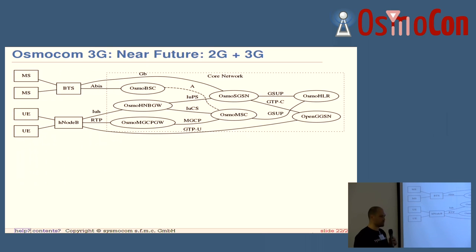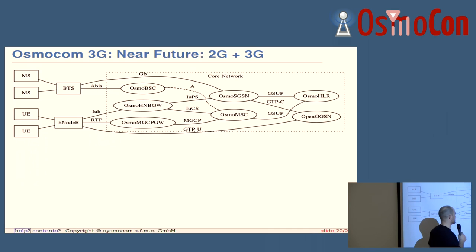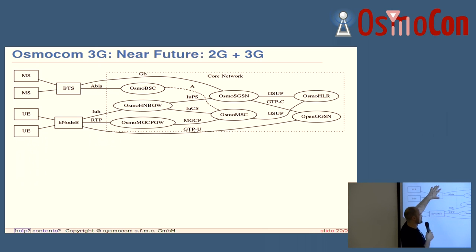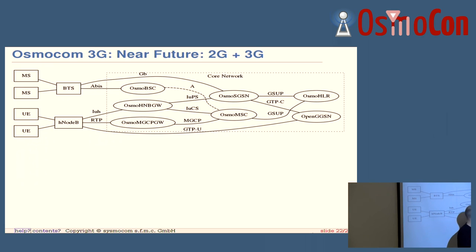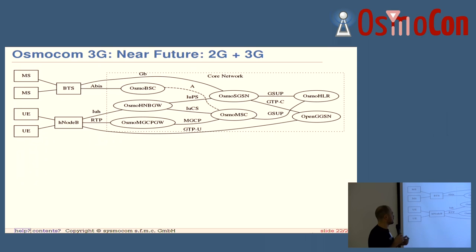One thing I would mention is this future picture. The plan now is to allow 3G and 2G operation at the same time — no NITB involved. We have our stock OsmoBSC as we had before, with a proper A interface now which is currently in development — Philip is doing that. The same old SGSN connection, the remote HLR, and the now standard VLR-HLR connection. The VLR is the traditional name for the part that talks to the HLR. So this is going to be Osmocom in hopefully the pretty near future, where we can operate 3G and 2G at the same time.